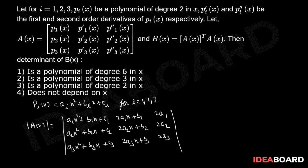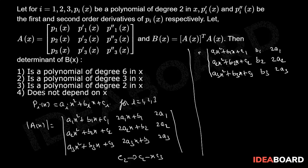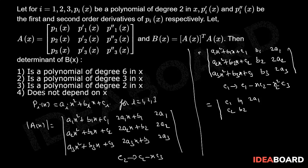Now apply the column operation C2 → C2 − x·C3. We get the determinant of [a1·x² + b1·x + c1, b1, 2a1; a2·x² + b2·x + c2, b2, 2a2; a3·x² + b3·x + c3, b3, 2a3]. Again applying the column operation C1 → C1 − x·C2 − (x²/2)·C3, we get the determinant of [c1, b1, 2a1; c2, b2, 2a2; c3, b3, 2a3].